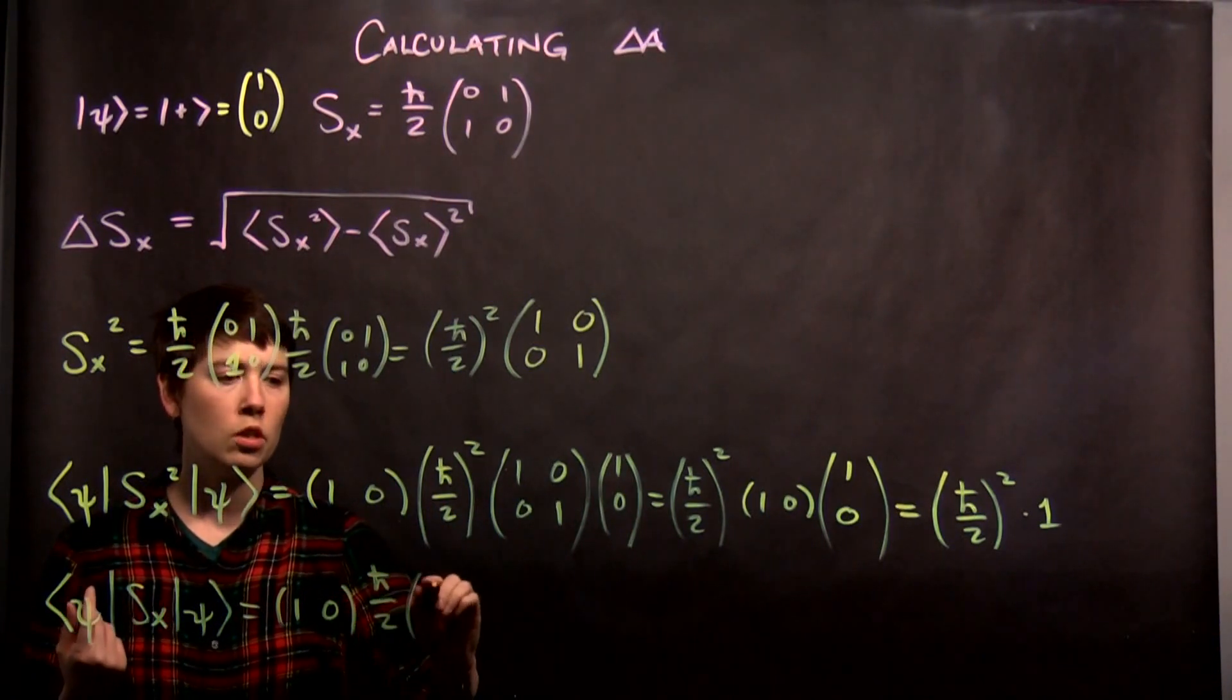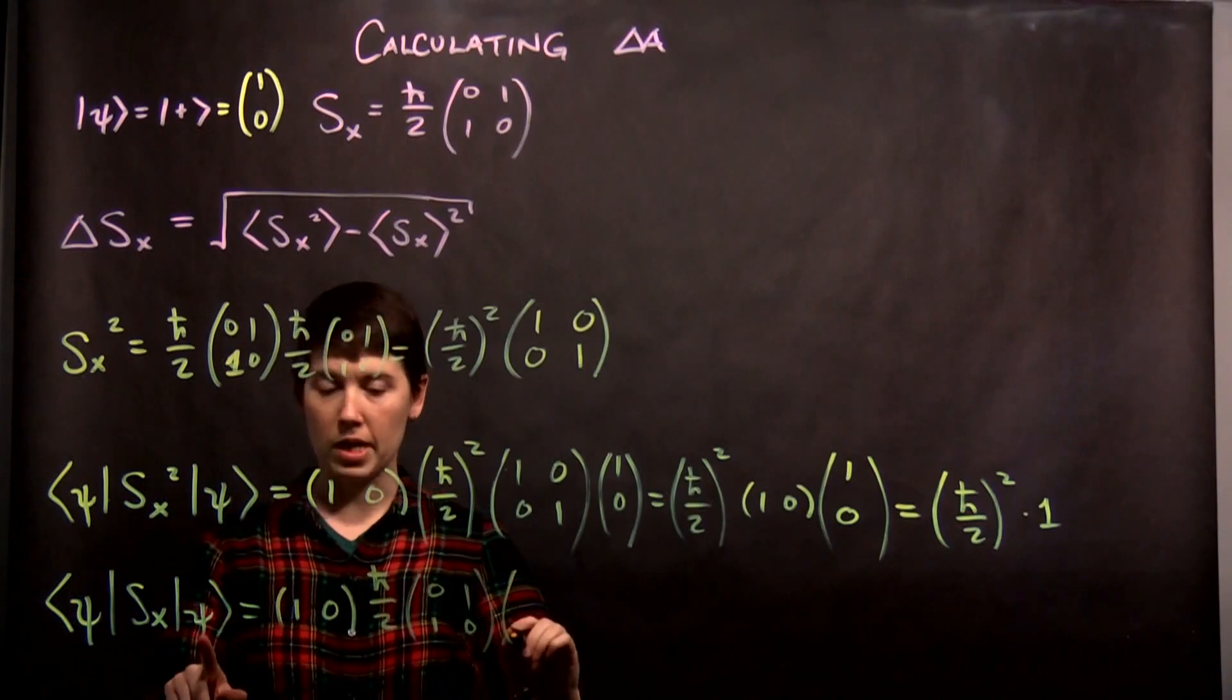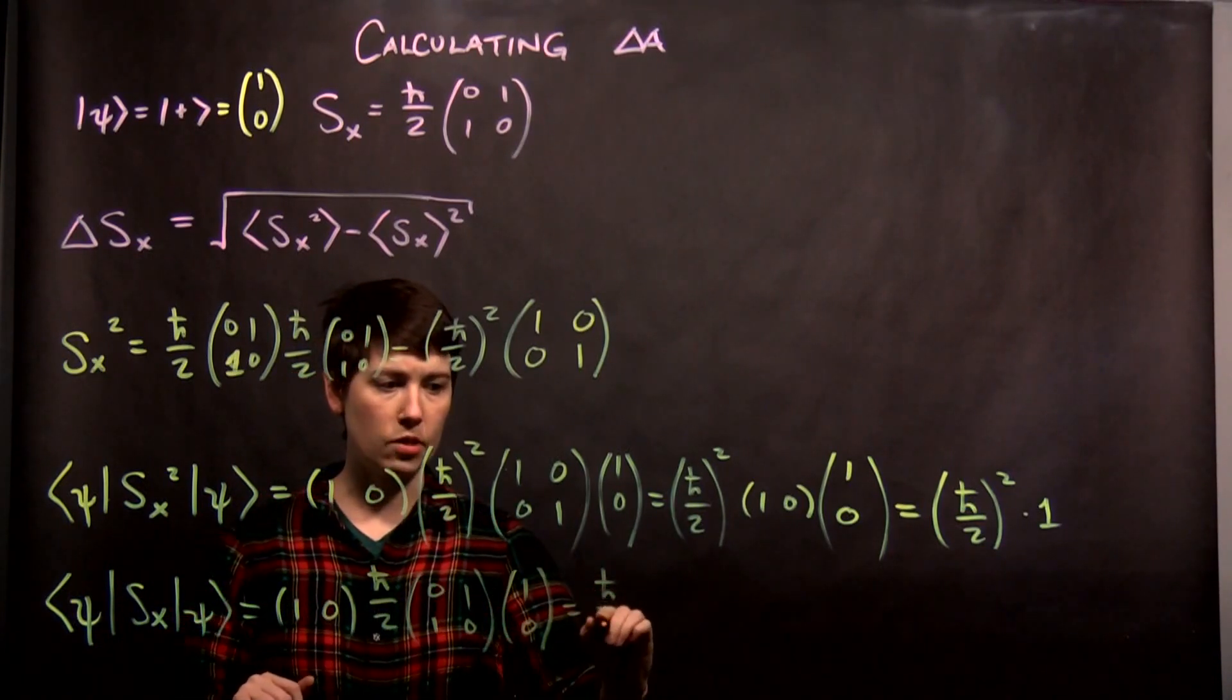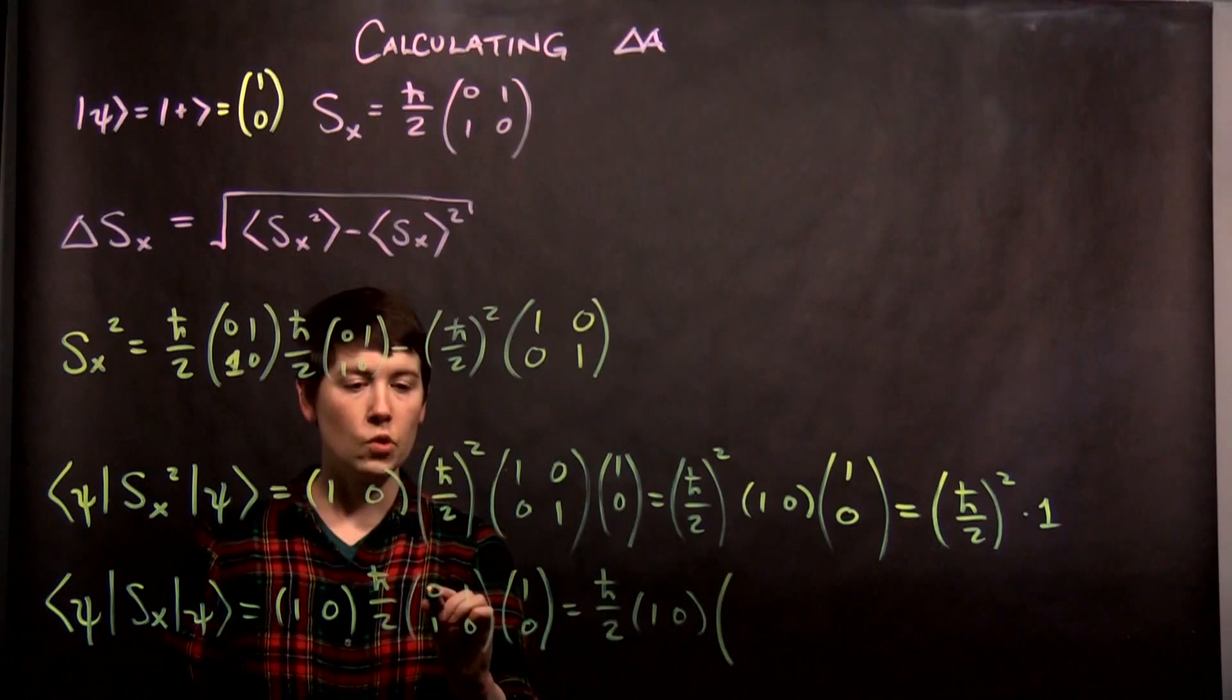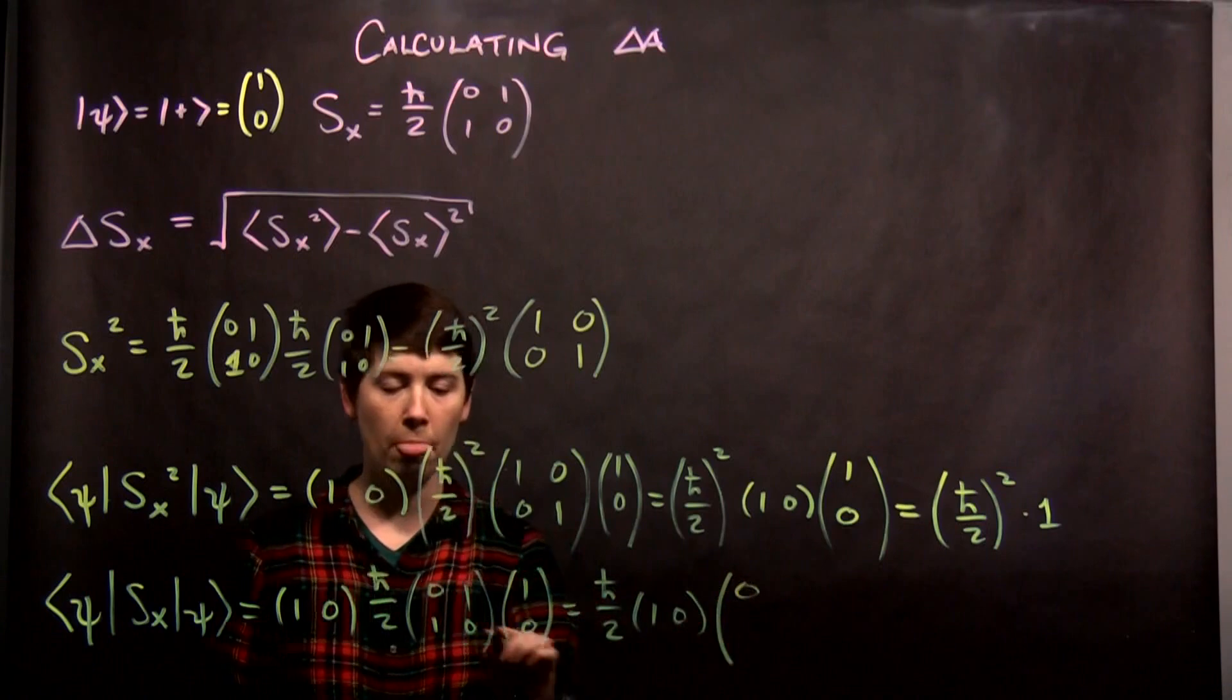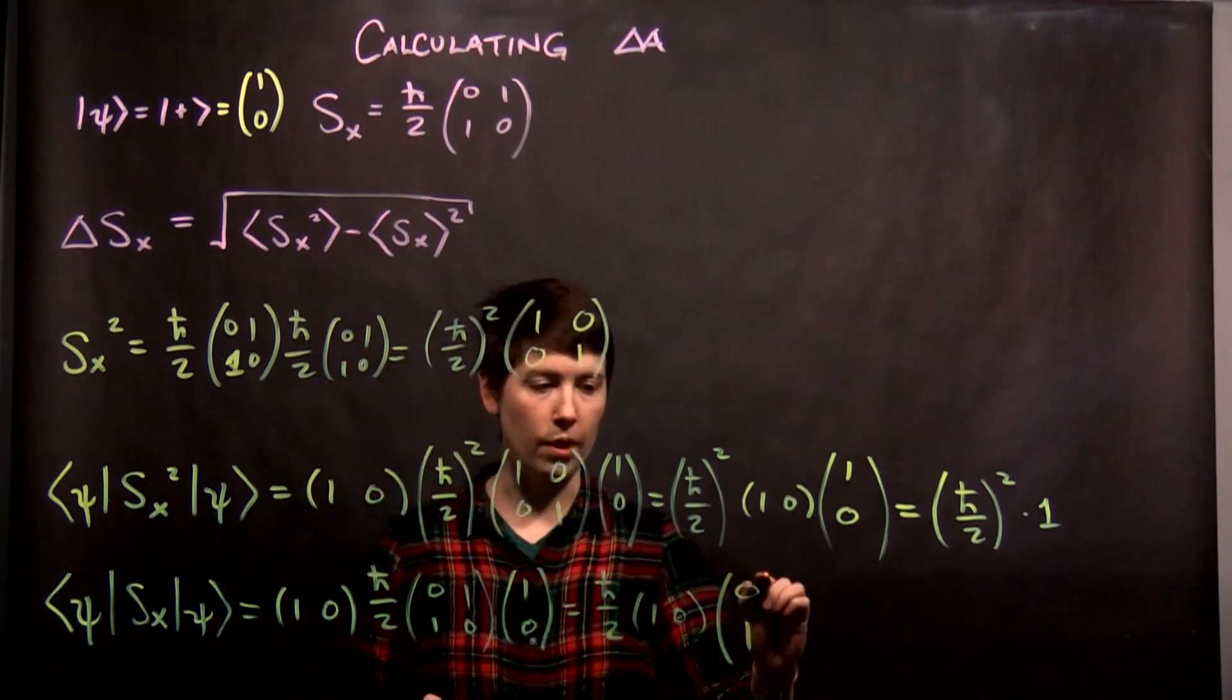And so we have 1, 0, and now just the operator itself. So h-bar over 2, 0, 1, 1, 0. And then my ket state, which is 1, 0. So again, I'm going to bring that scalar out front. I'll do the matrix times the ket first, which will give me a new ket state. So row times column, 0 times 1 plus 1 times 0 is 0. 1 times 1 plus 0 times 0 is 1.